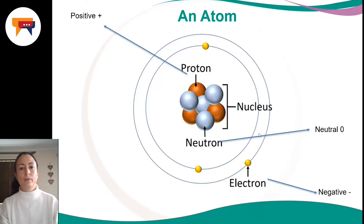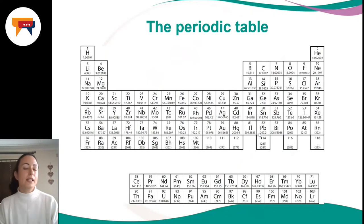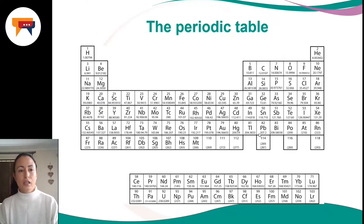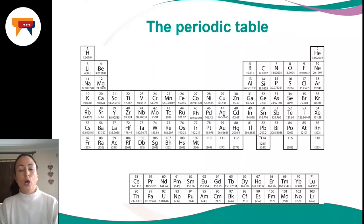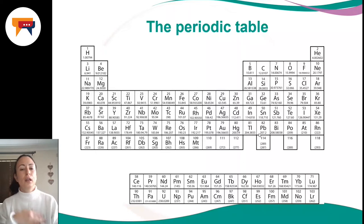Elements are found on the periodic table. In NST 1501, we don't get too involved with the periodic table structure, but I do want to refer to a few things. The periodic table was created by a scientist called Dmitri Mendeleev. The elements are arranged depending on their different characteristics. All the rows going across the periodic table we refer to as periods, and all the columns coming down we refer to as groups.